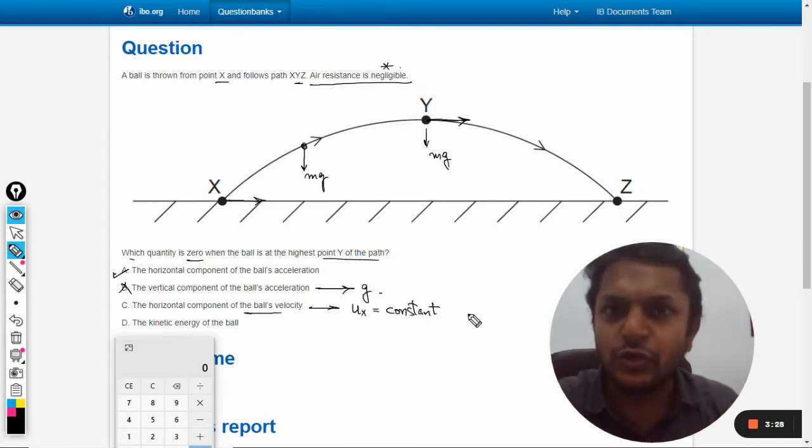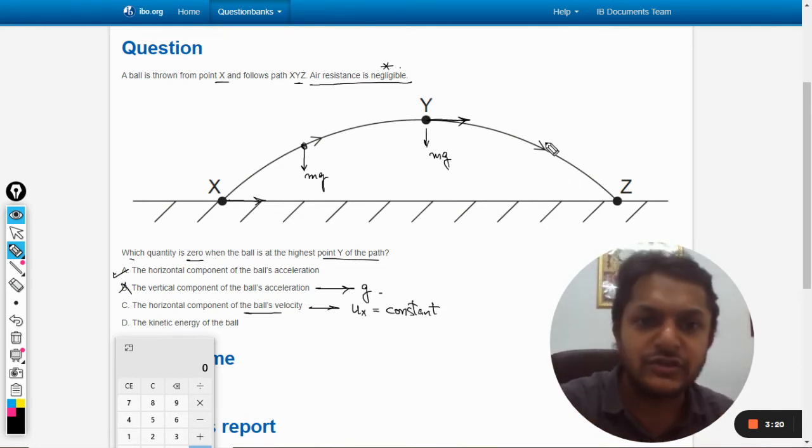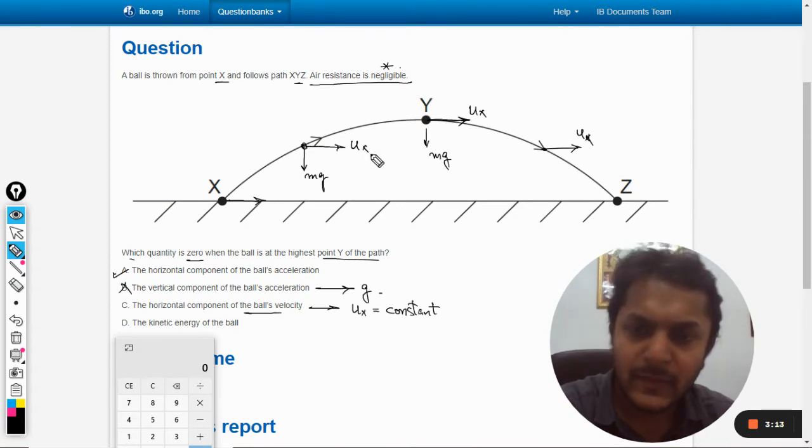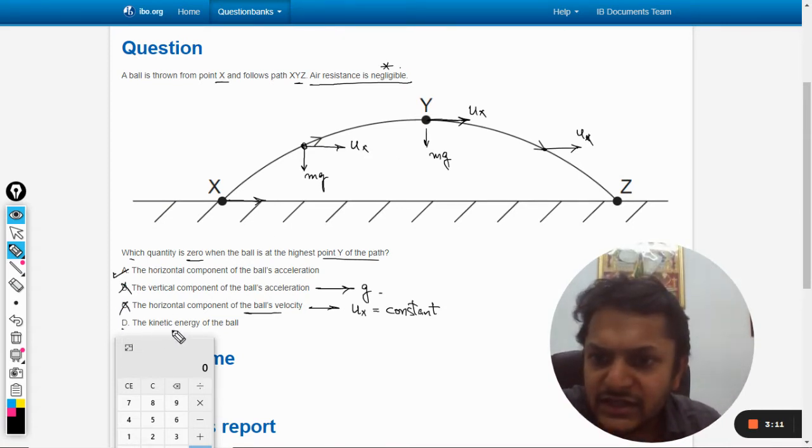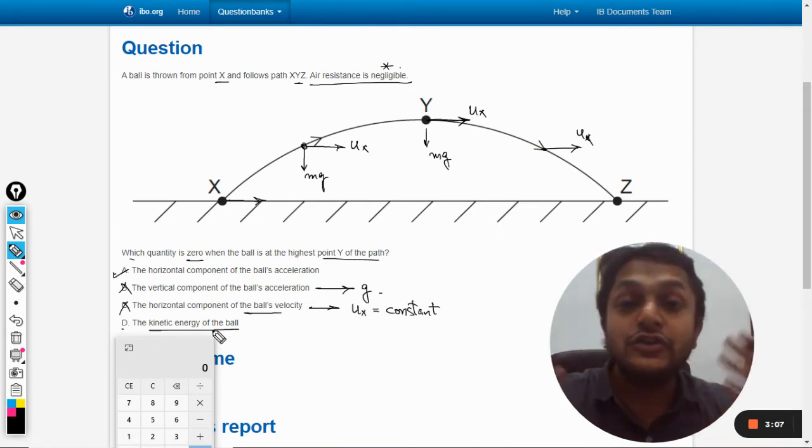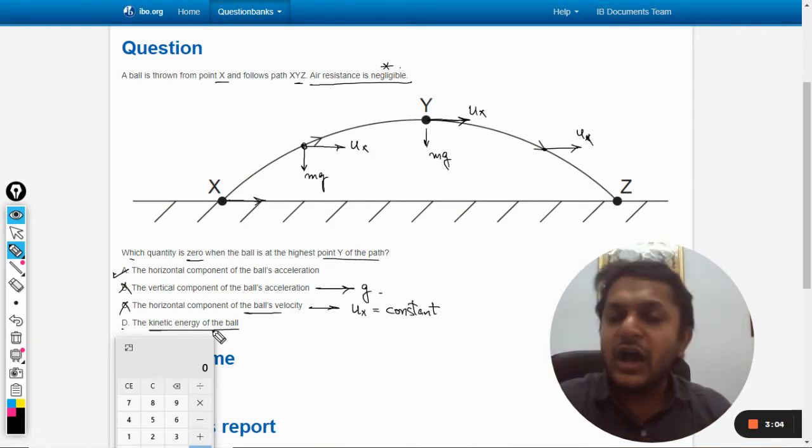And it is like never zero. Obviously, when it stops at point Z and the ball starts touching the ground, at that time it's a separate case. But otherwise, horizontal velocity at each and every point is the same. Now D: the kinetic energy of the ball. Obviously, when the horizontal velocity is not zero, how can the kinetic energy be zero? So this is also wrong.